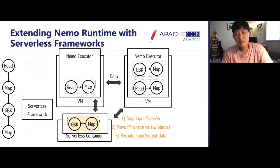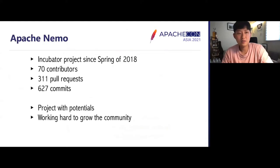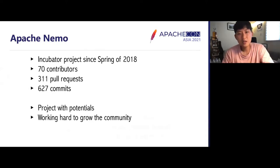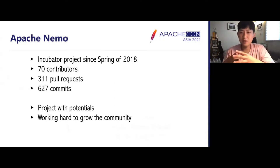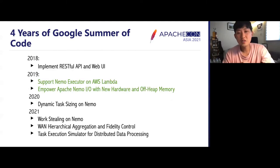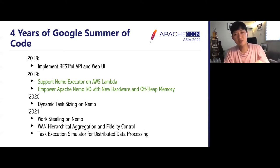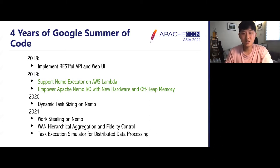With serverless containers, we can migrate and offload the burden of operations causing bursts to the serverless containers to scale out without damaging latency — also early-stage work. Our project started in 2017 and has been an incubator project since spring 2018, now with 70 contributors, over 300 pull requests, and over 600 comments. We are participating in Google Summer of Code for four consecutive years to attract open source contributors, and have successfully mentored seven projects — one of which was the web user interface shown in the demo.